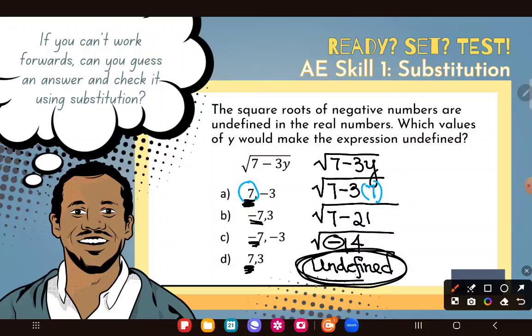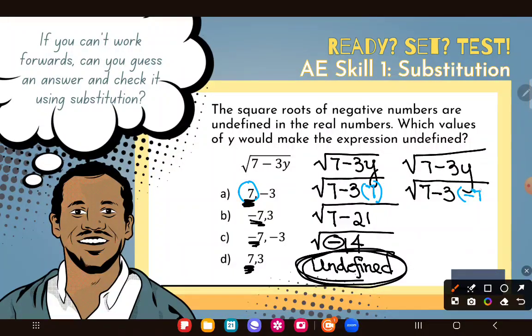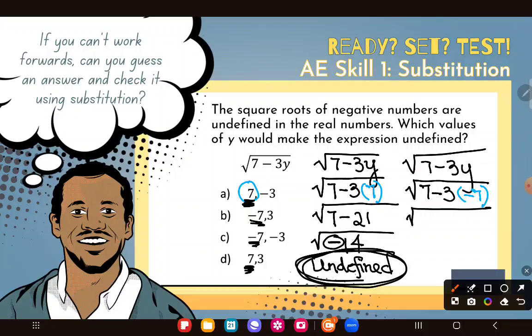I'm guessing negative seven probably doesn't work. Let's just do a real quick check because you know how they are. If they have sevens and negative sevens, usually one works and the other doesn't. So I'm gonna go ahead and put in my seven minus three Y. And let's see what happens if I plug in instead of seven, negative seven.